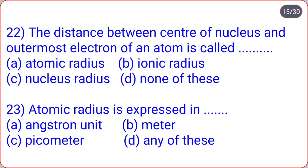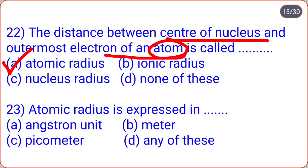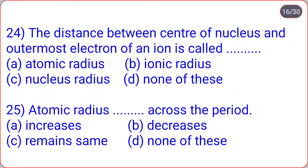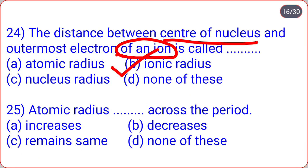The distance between the center of the nucleus and the outermost electron of an atom is called atomic radius — option A. Atomic radius is expressed in angstrom units, meters, or picometers — correct option is D, any of these. The distance between the center of the nucleus and the outermost electron of an ion is called ionic radius. Atomic radius across the period — does it increase, decrease, or remain the same?